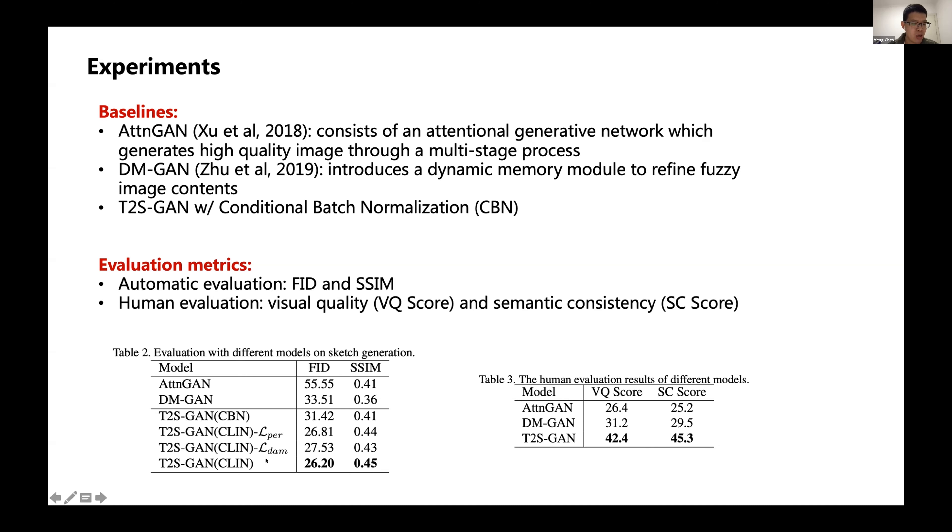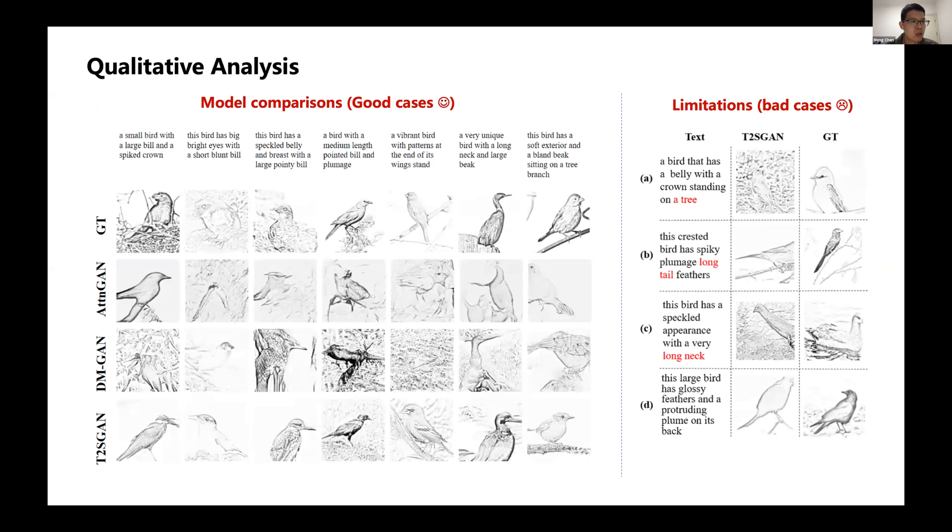We also did ablation studies. We removed each extra loss separately, and we can see that the performance degrades, indicating the contribution of our proposed losses. We also replaced the CLIN block with CBN block, and we can see the performance becomes worse.